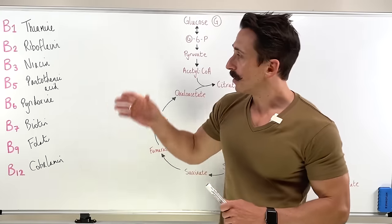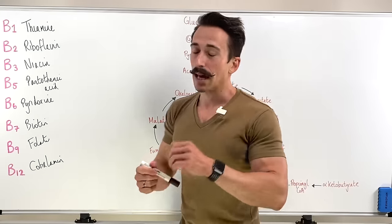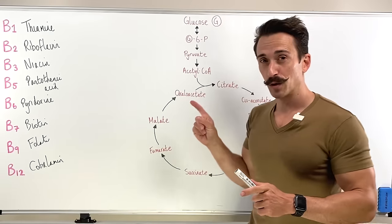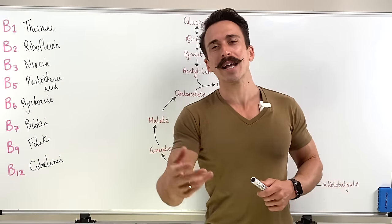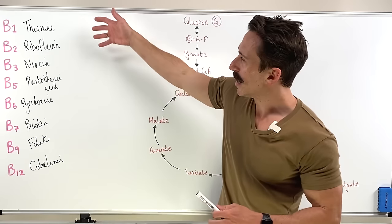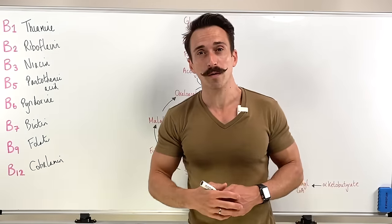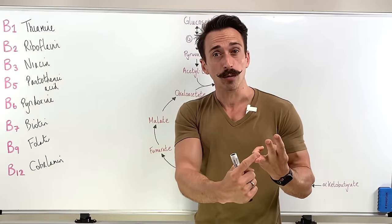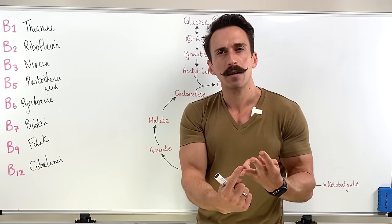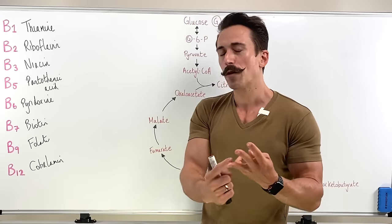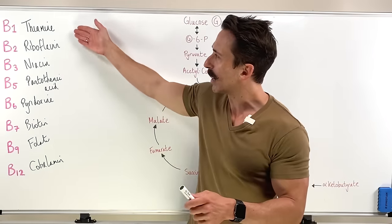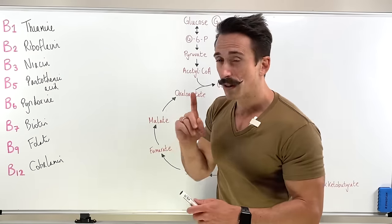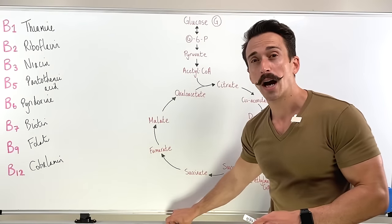These are our B vitamins. When we need to talk about what they do — particularly in metabolism — that vague comment that your lecturer makes about B vitamins being important for carbohydrate, protein, and fat metabolism is true. But how do they fit in? The thing is, they don't necessarily work in their basic form. They need an active form to work in. So let's have a look at what the active forms of each are.